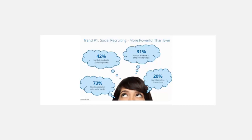Some pretty impressive statistics: 42% say that candidate quality can be improved through social recruiting, and 31% saw an increase in employee referrals. What that means is that candidates coming through social have some kind of social connection — either with the recruiter or an employee — and people are doing more research. They're not just applying to get a job; they're going to sites with company information, looking at employers in their geographic area, and talking to happy employees about culture and leadership.